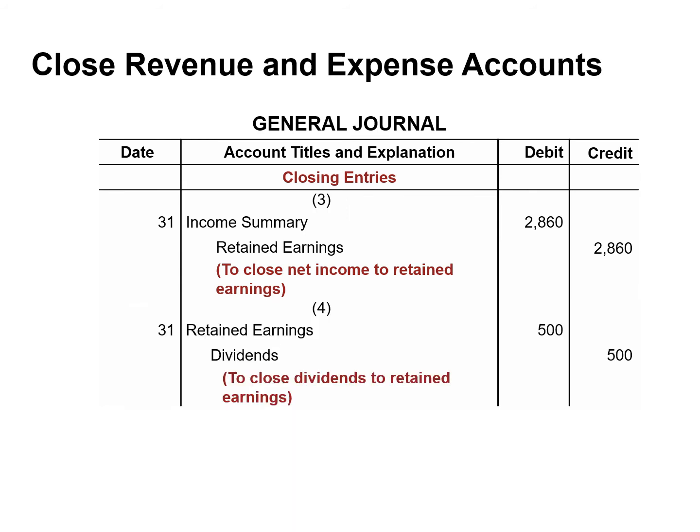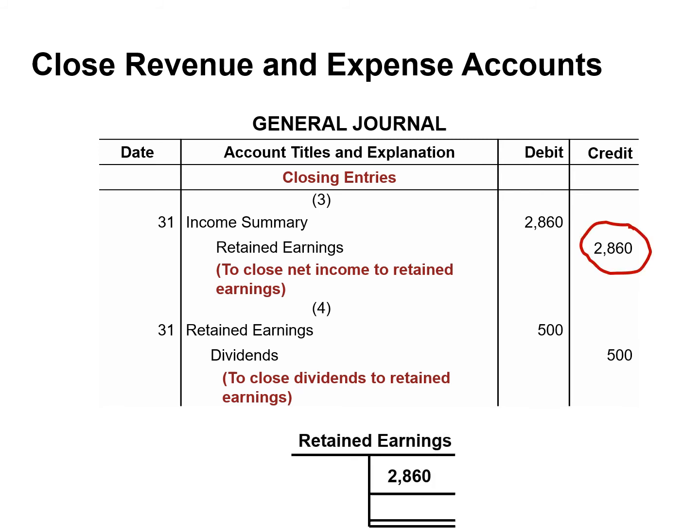The last entry will debit retained earnings and credit dividends for $500 to close dividends to retained earnings. After posting these entries, the balance in retained earnings is $2,360. This amount agrees with the amount reported on the retained earnings statement.